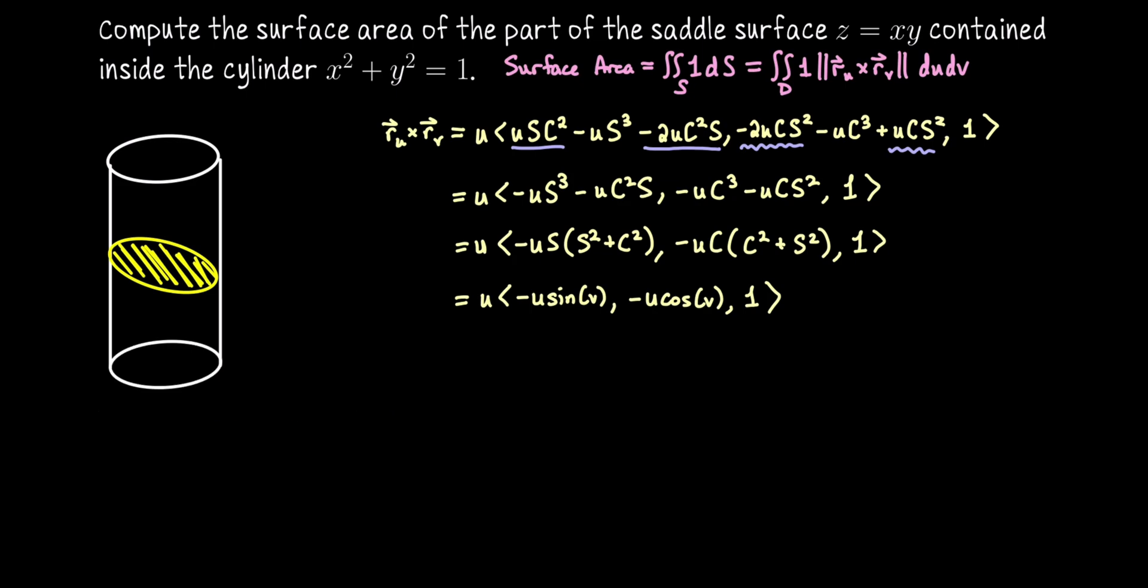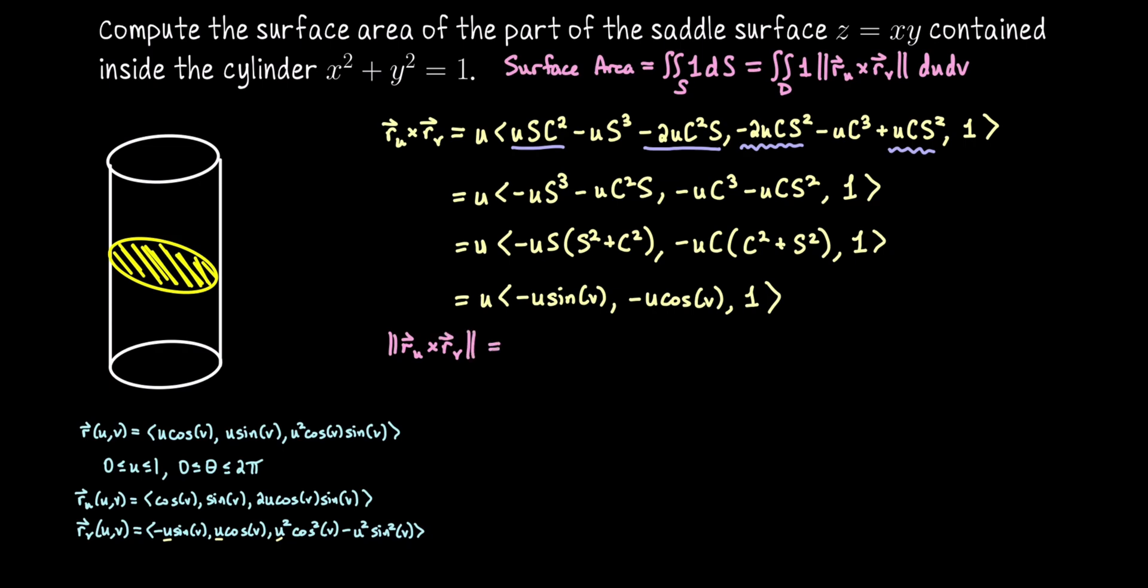We need the length of this. Let me shrink what's in the lower left corner. Okay, now we can say that the length of this cross product, ru cross rv, which is going to go into our integrand, is the length of this vector just above. We have that scalar out front. I'll do the right thing and write absolute value of the scalar first. And then we take the square root of the sum of the squares of each of the components. So that's going to be u squared sine squared v plus u squared cosine squared v plus 1. Okay, and then since u is between 0 and 1, the absolute value of u is just u. And then since sine squared plus cosine squared is 1, we're left with u squared plus 1 inside of the radical.